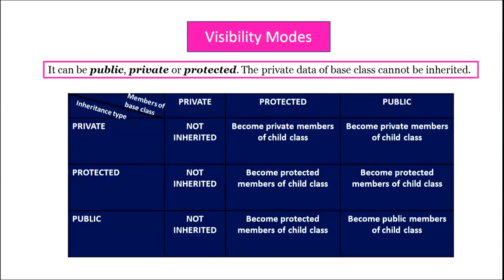In this table, we have the members of the base class which can be private, protected and public. If the type of inheritance is private, then the private members of the base class will not be inherited. The protected members of the base class become the private members of the child class, and the public members of the base class also become the private members of the child class.